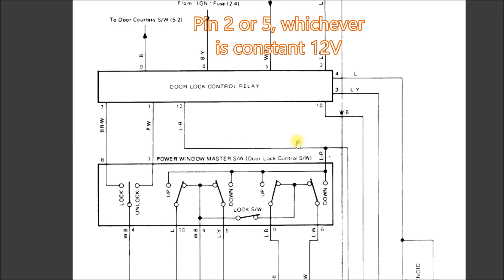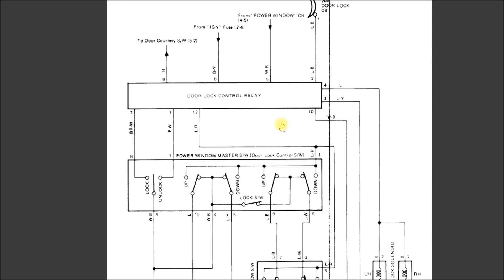Later models you're kind of on your own, but that's the idea. You want to find where power comes into the power window relay and where power leaves the power window relay, and just put a jumper in there. In the later models you're not going to just be able to pull the relay out and have it work.